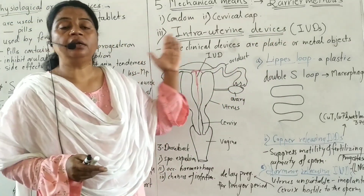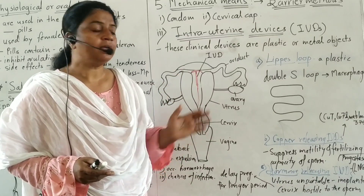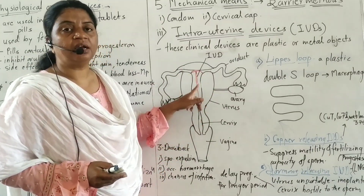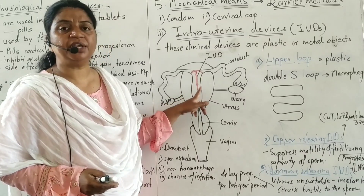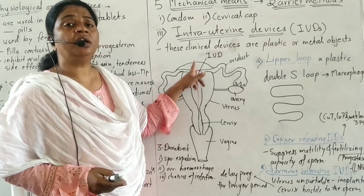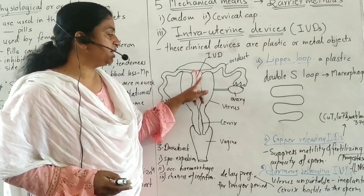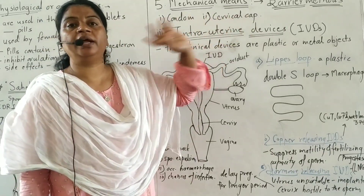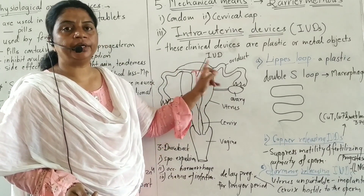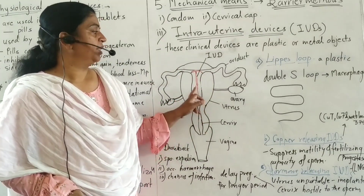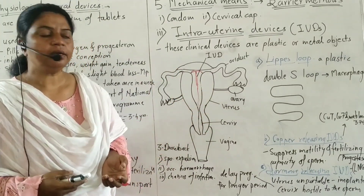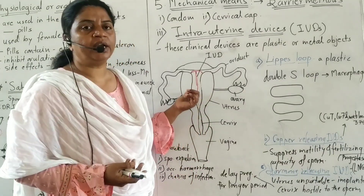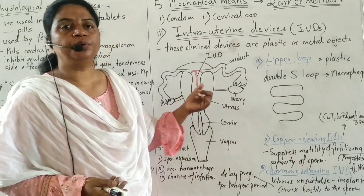Intrauterine devices — 'intra' means inside, and 'uterine' means uterus. So intrauterine devices are devices which are fit into the uterus. There are a number of types of intrauterine devices or IUDs.